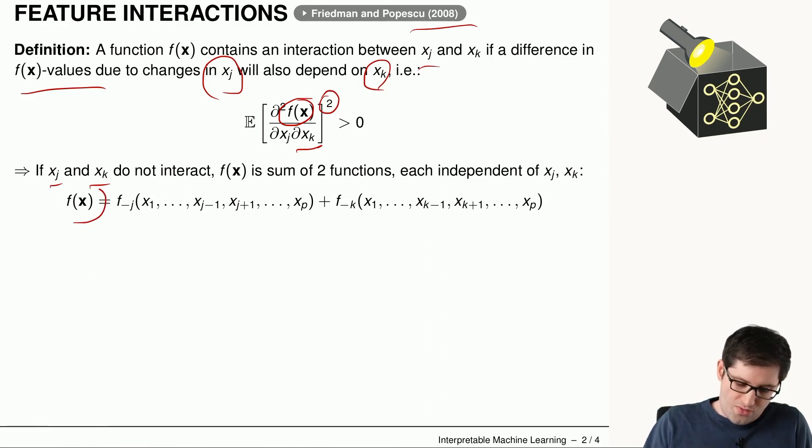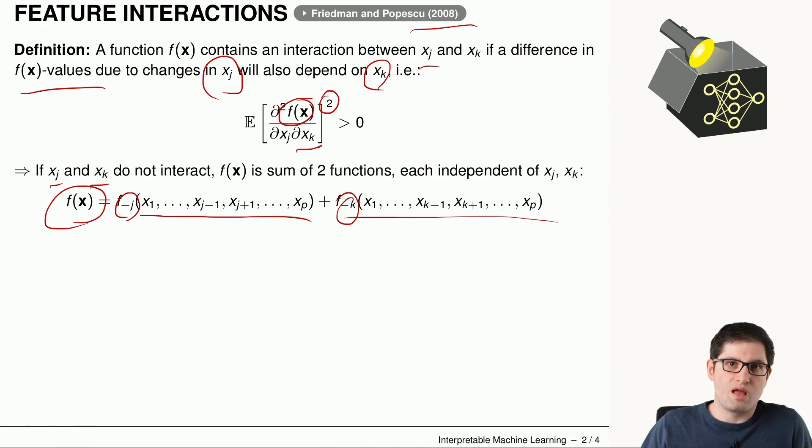we can write the function as the sum of two functions removing feature j from the one hand side and removing the second feature k from the other hand side. Let's look at an example to make this more clear.